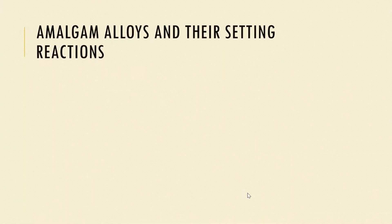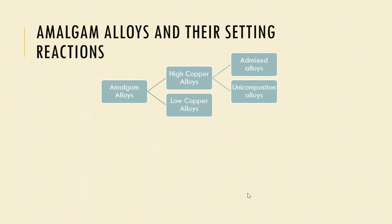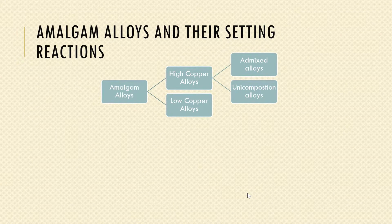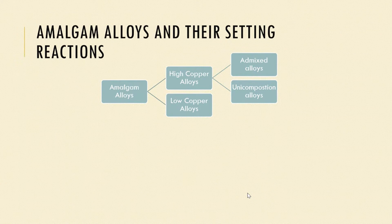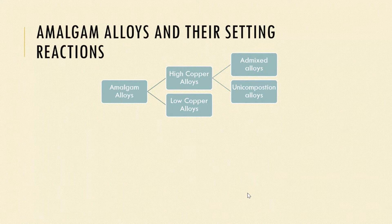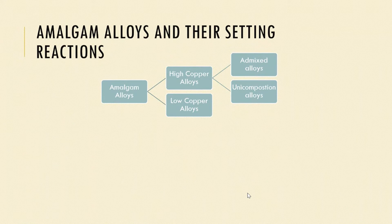Amalgam alloys are classified into low copper and high copper alloys based on their composition. The high copper alloys are further classified into admixed alloys or blended alloys and unicomposition alloys.